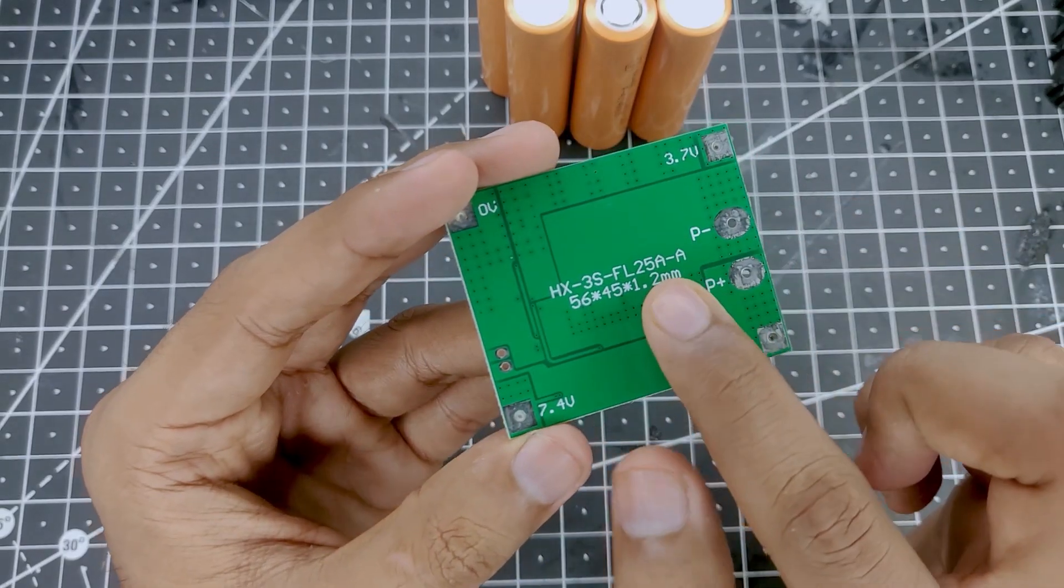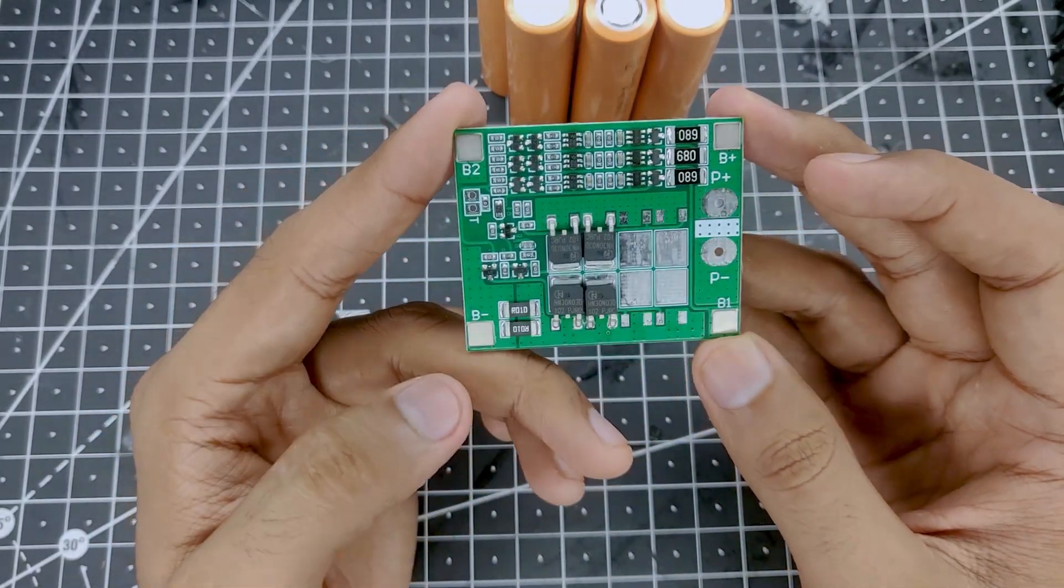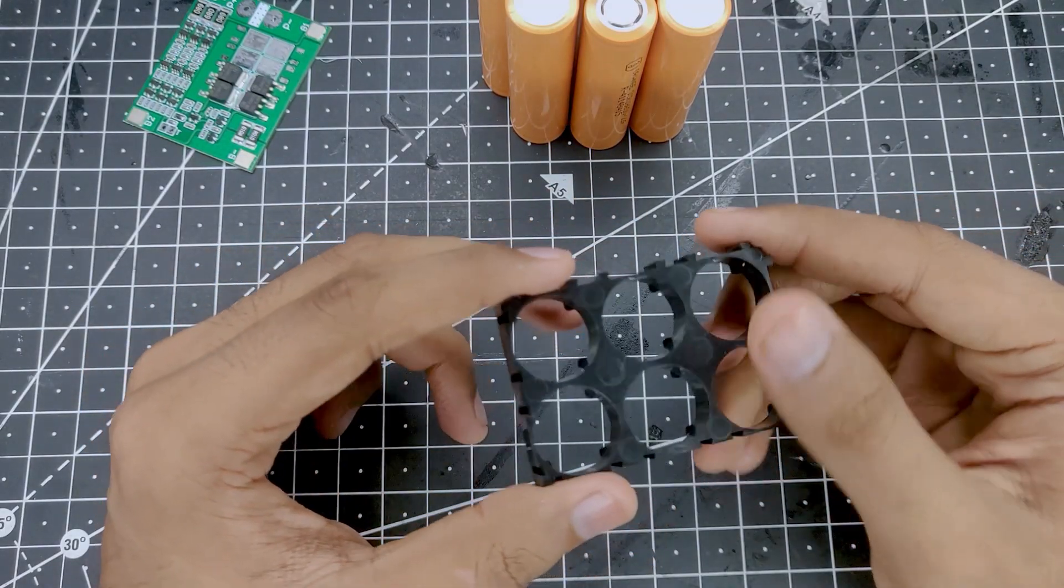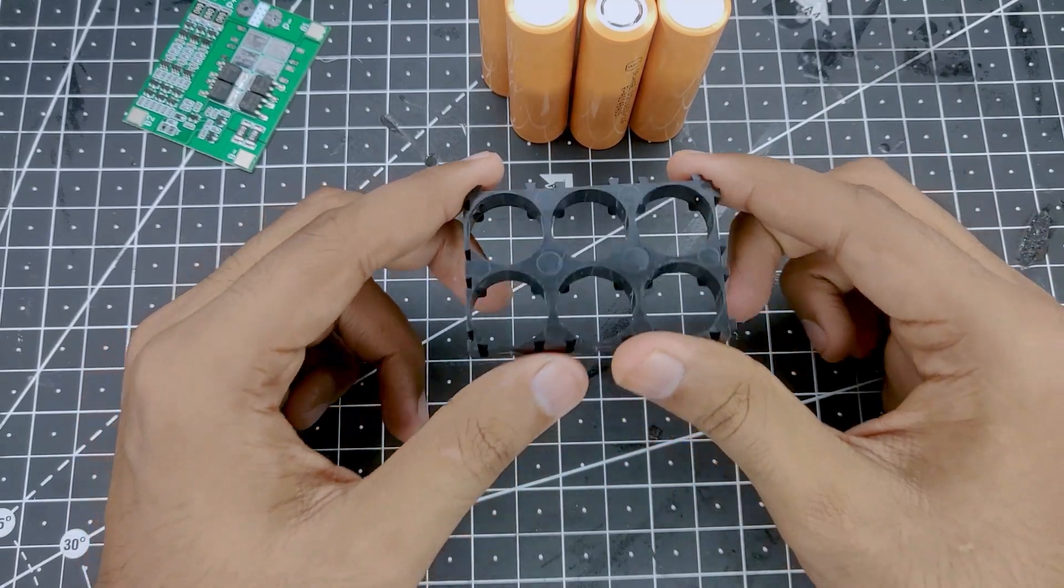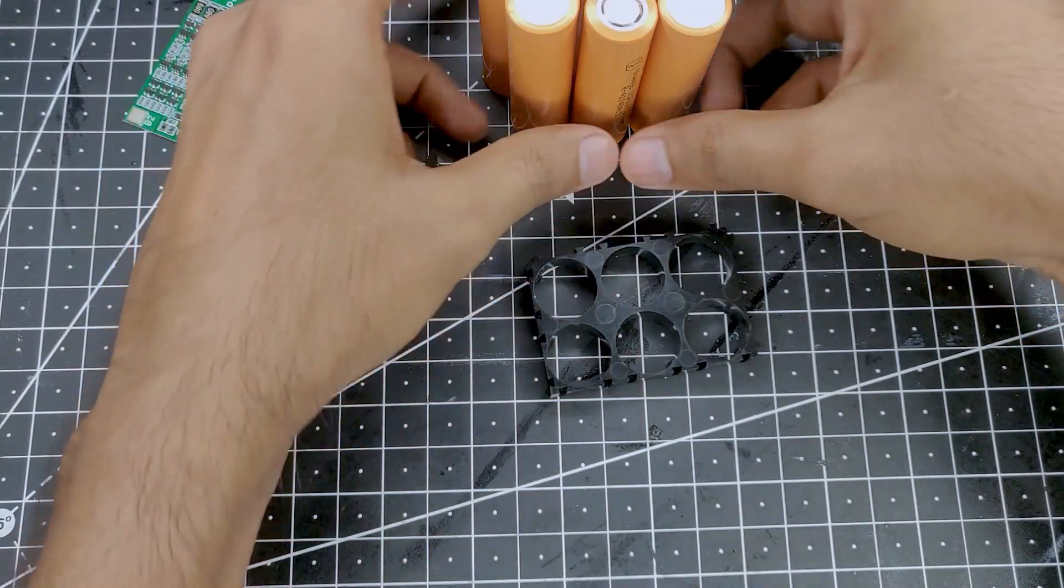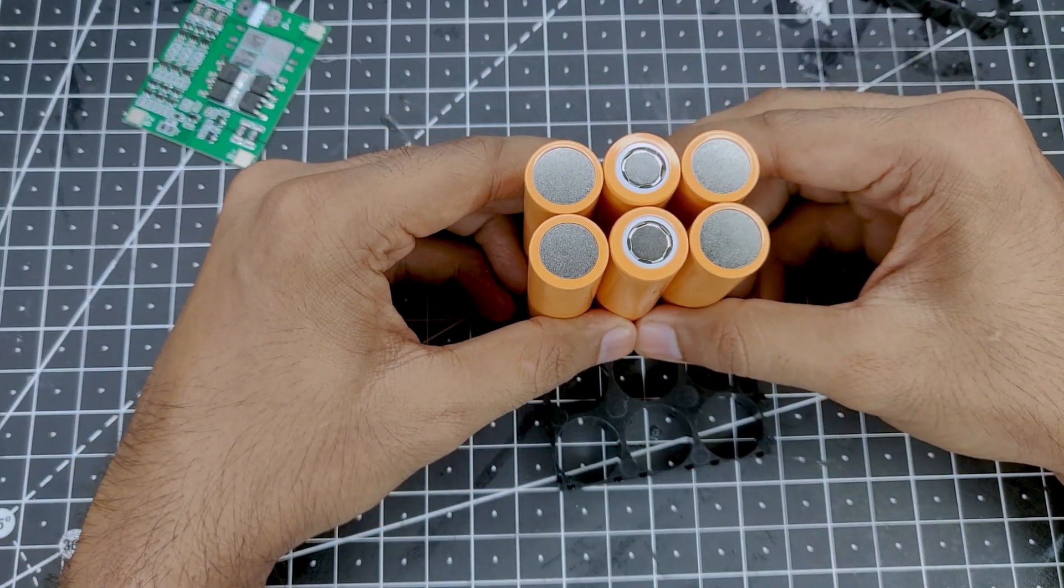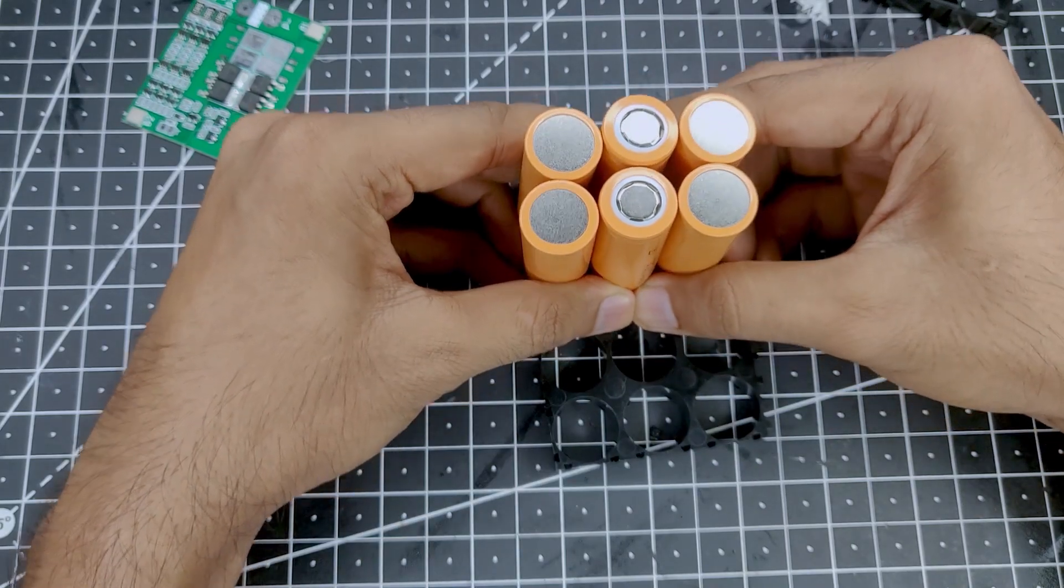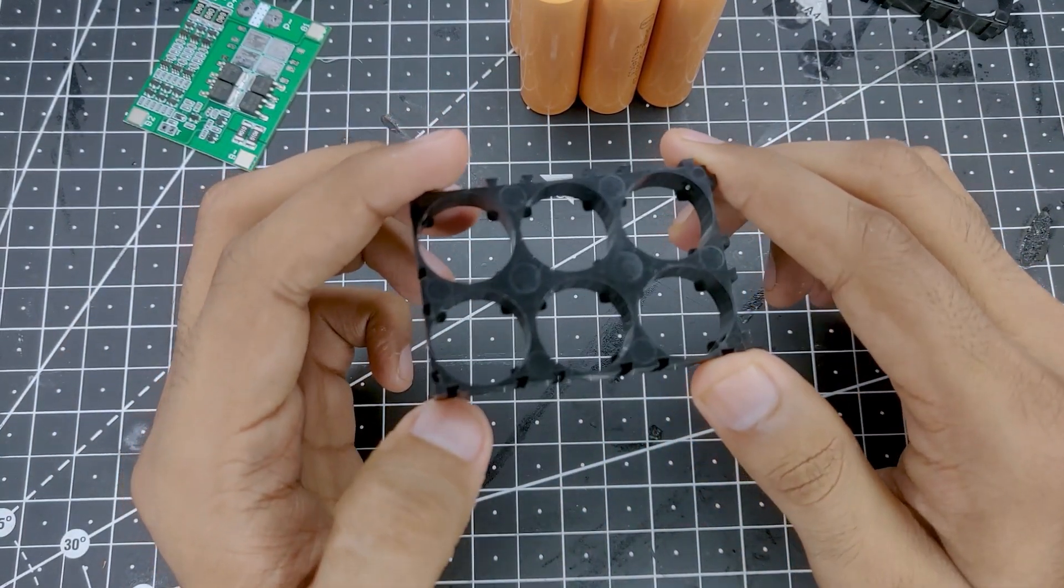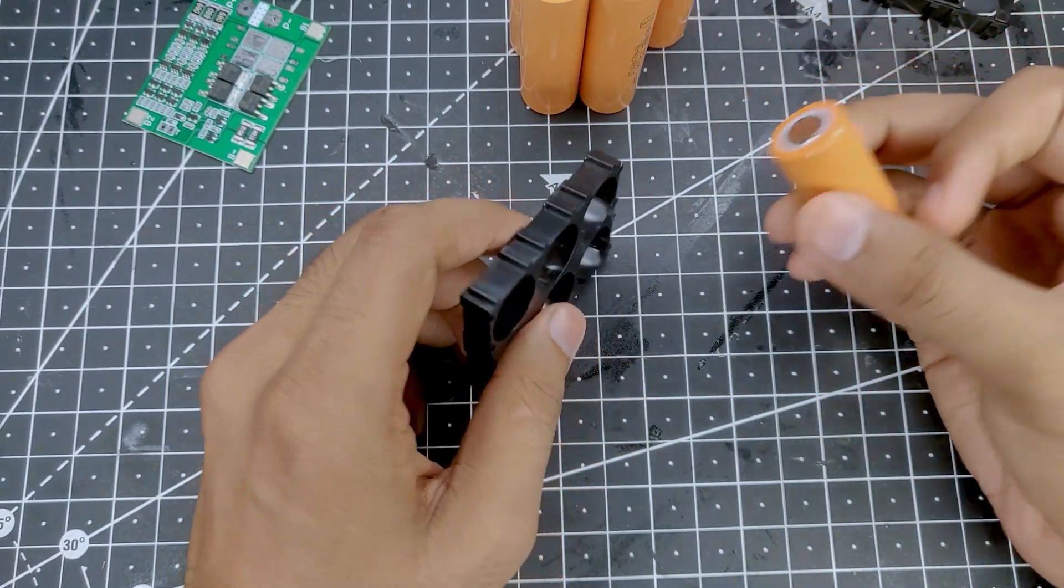This is a 25 amp board as you can see written right here - it can provide a maximum power of 25 amps at 12 volts, which is more than enough for my projects. To make life easier I'm using these brackets so I can easily maintain the shape of the batteries. Using these brackets makes the job a lot easier.